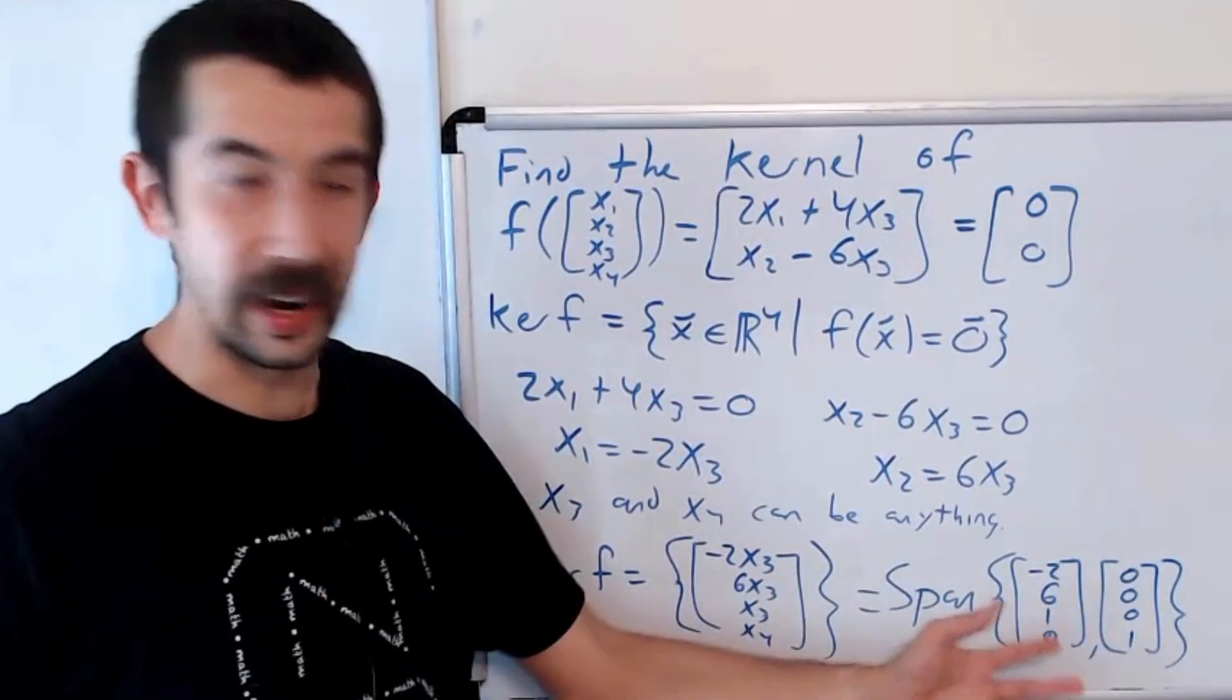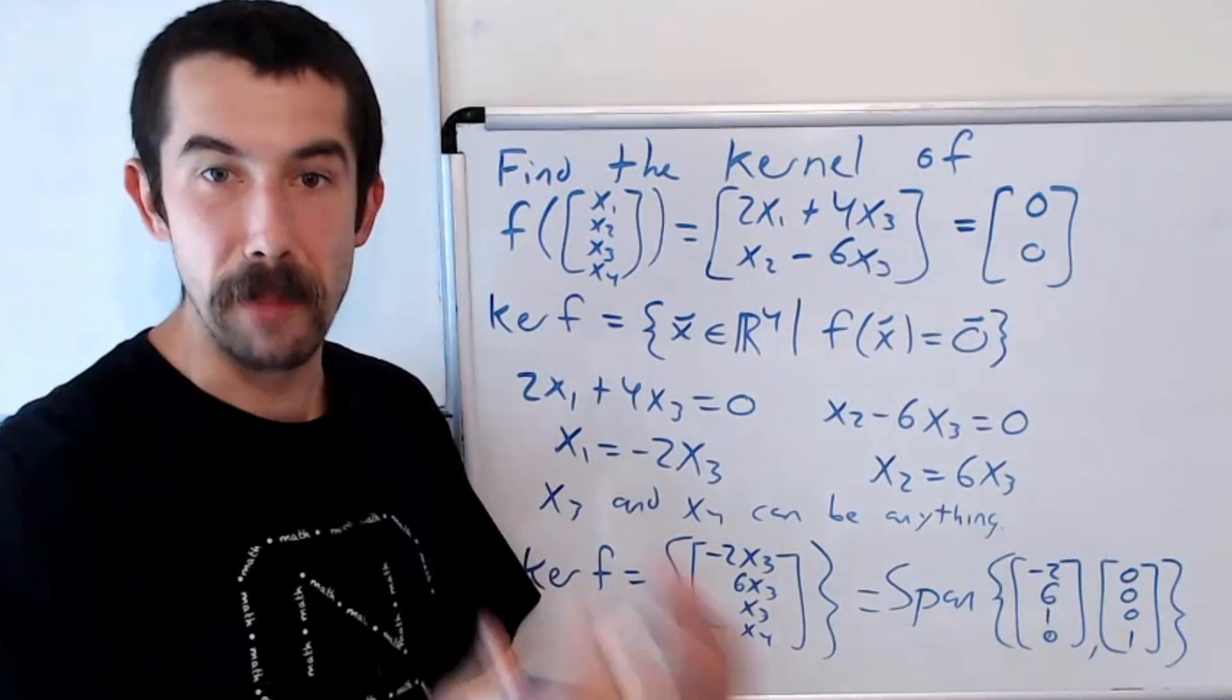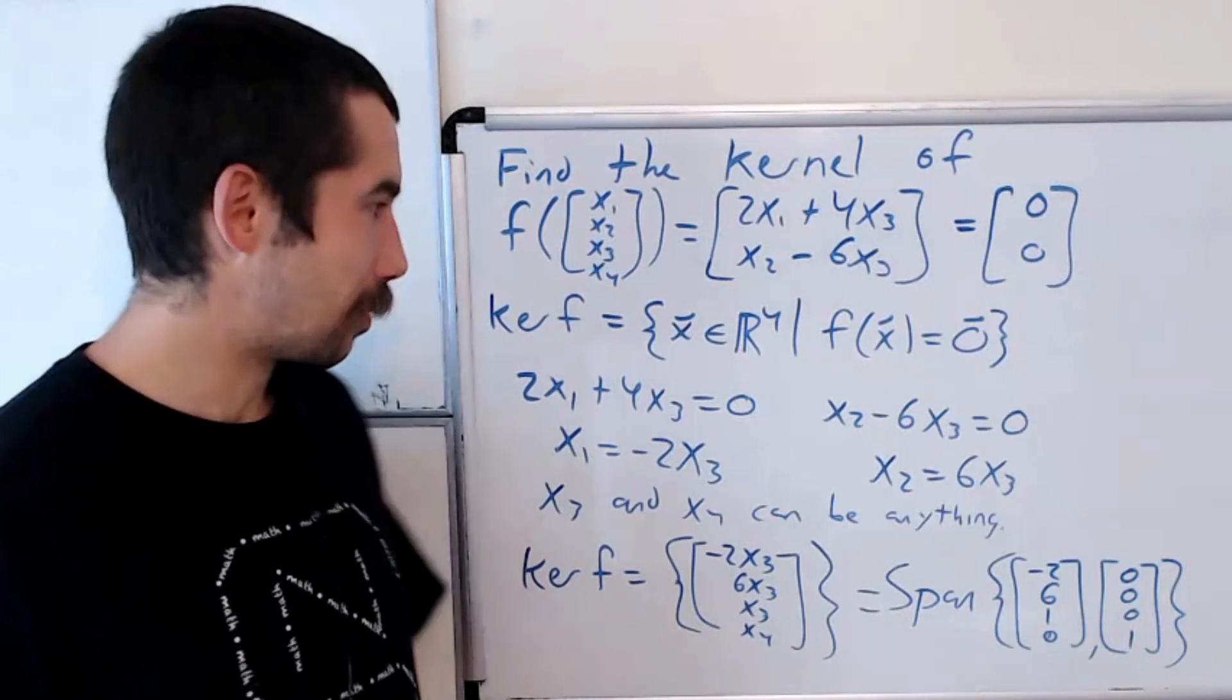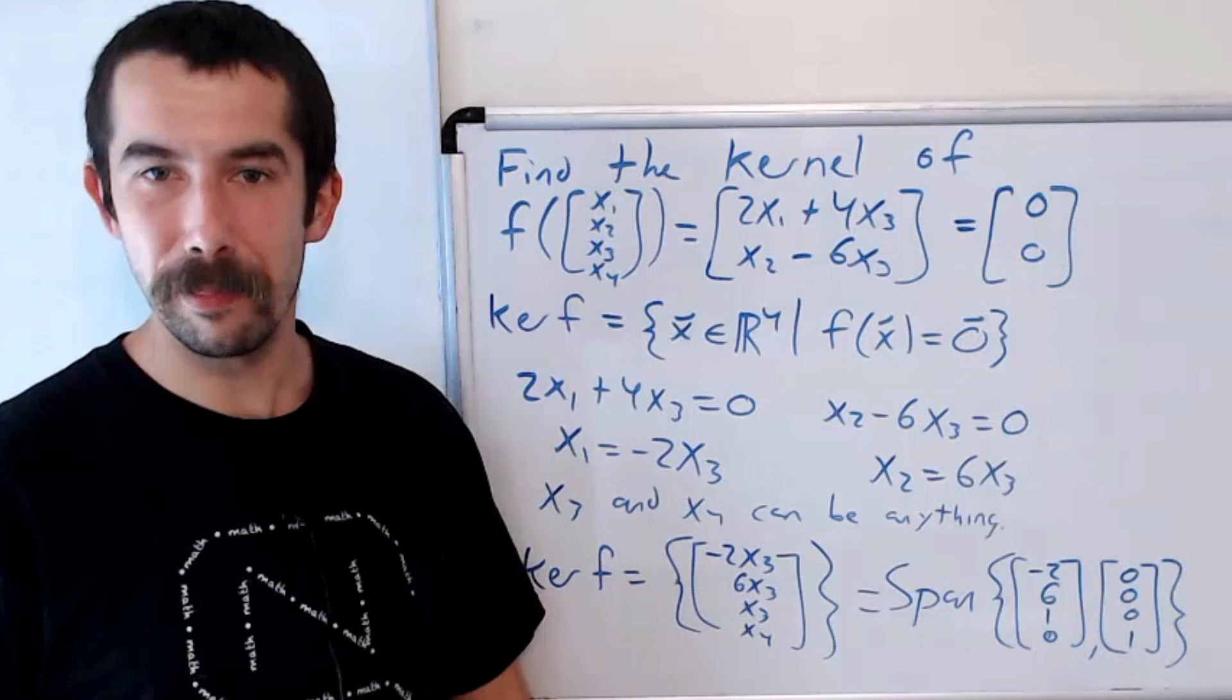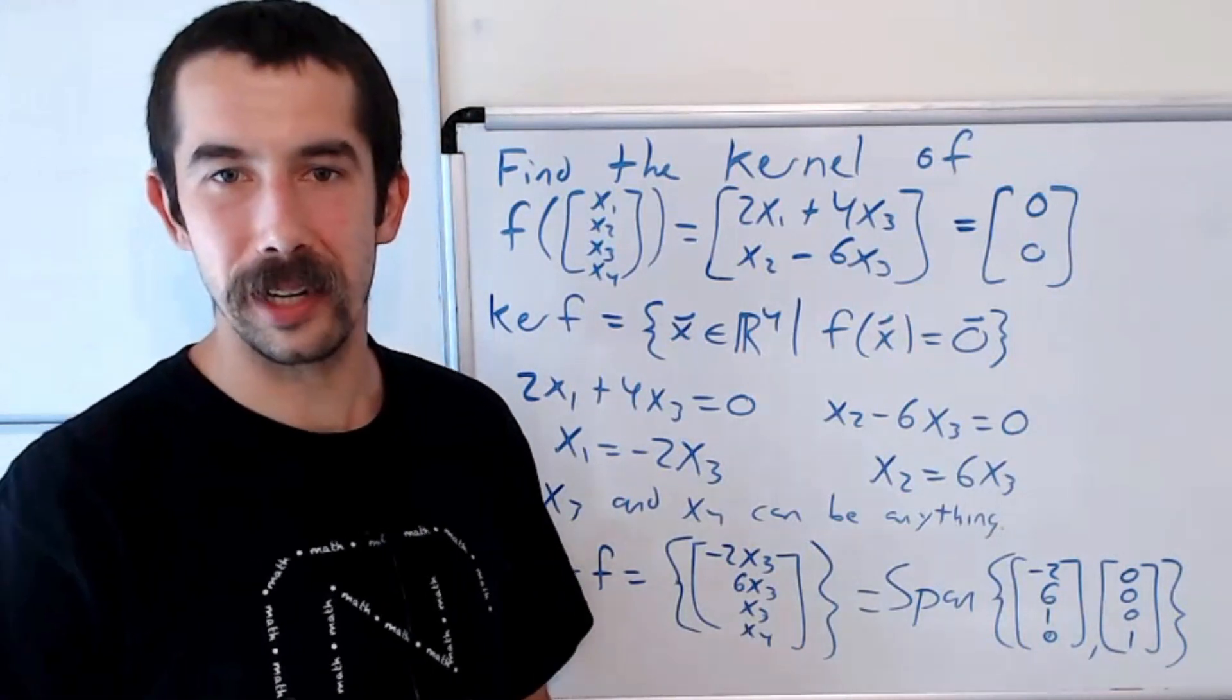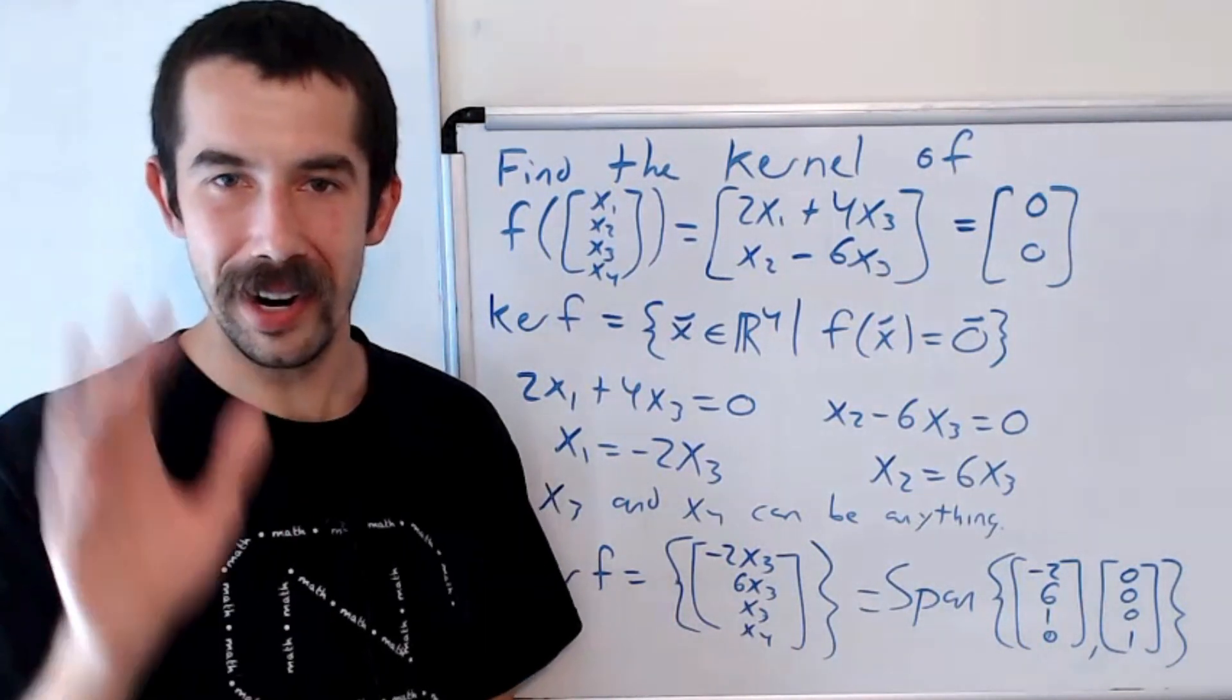So any vector in this span would be mapped to 0 by this function f. Not too bad. Well, thanks for watching, and let me know if there's any linear algebra topics you would like to see me make a video on. All right, see you later.